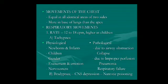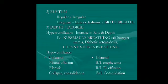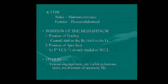Look for the respiratory movements — the rate, depth, rhythm, and type. The rate should be 12 to 16 per minute with a regular rhythm. Look for the depth of respiration, which may be decreased unilaterally or on both sides. Look for the type of respiration: abdominal breathing is seen in males, thoracoabdominal in females — whether the respiration is predominantly abdominal or thoracic.